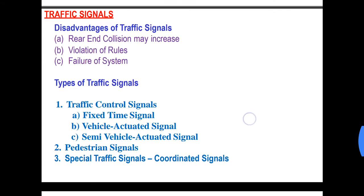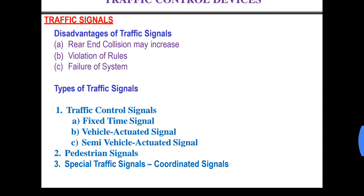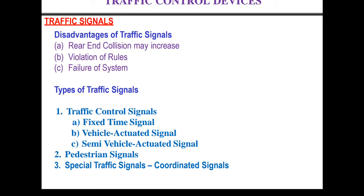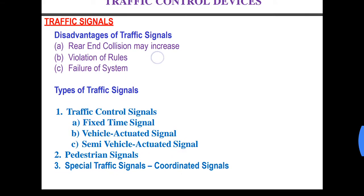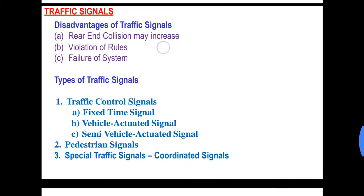Now, what are the disadvantages of traffic signals? Rear-end collision may increase. Rear-end collision is the type of collision where a vehicle from behind hits the vehicle in front. There may also be chances of violation of rules, as there are some individuals who would anyways violate these rules.